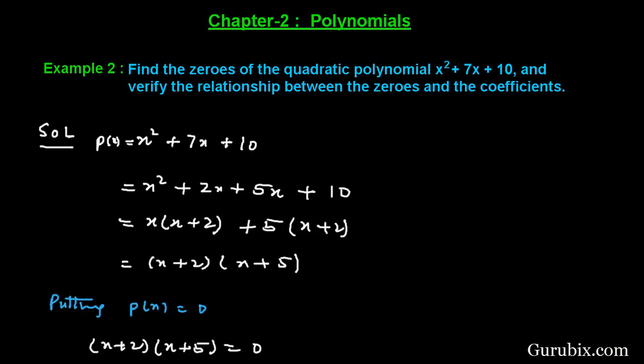Welcome friends. In this video we shall solve example number 2 of chapter 2 of class 10. The example is: find the zeros of the quadratic polynomial x² + 7x + 10 and verify the relationship between the zeros and the coefficients. First of all, we shall note the given polynomial: x² + 7x + 10.